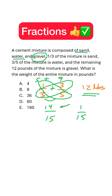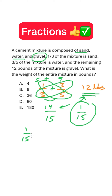Fourteen out of fifteen parts are sand and water. We are left with one part — that is twelve pounds. If one fifteenth of something is twelve, we have to multiply by fifteen to get the whole. So one fifteenth of x is equal to twelve pounds, and x will be fifteen times twelve.